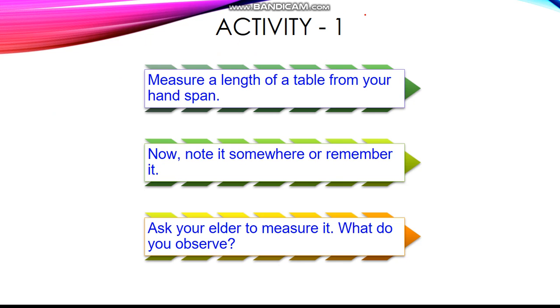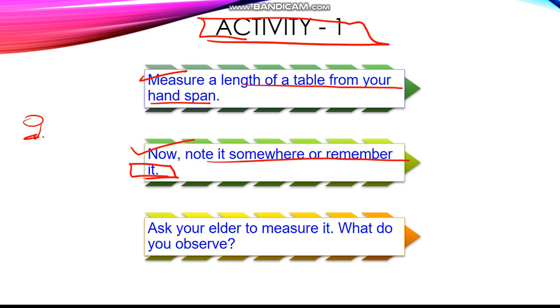This activity is based on measuring a table with the hand span of yours and your elders. You need to measure length of a table from your hand span and note it somewhere or remember it. Let's say yours is five hand spans and for your father, it is two hand spans.